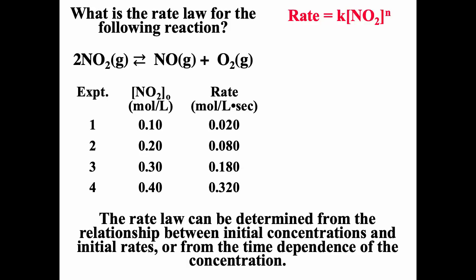What is the rate law for the reaction 2NO + O₂? One way to determine the rate law is by looking at how the initial rate changes with initial concentration. Here we see that when concentration doubles, the rate is four times faster — so n = 2 and it must be second order.